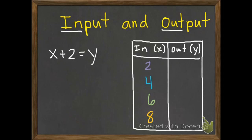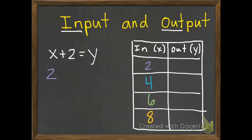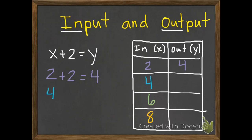We're going to see what happens when we put these numbers in for x. With our equation, if I put my first number of 2 in for x and do plus 2, what is y going to be? Well, 2 plus 2 is 4. So if I put in a 2, I get out a 4. Let's try our second number, 4. So I put 4 in for x and I'm adding 2: 4 plus 2 equals 6. So let's put 6 in our table.